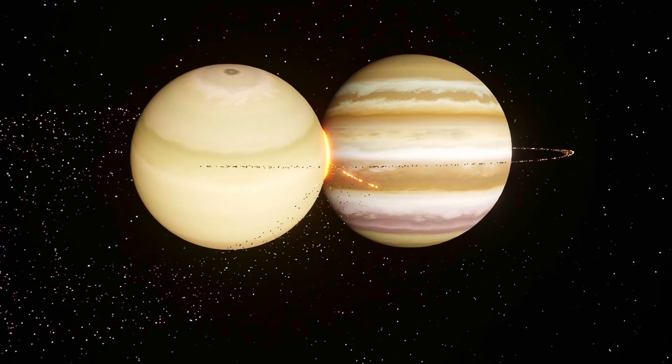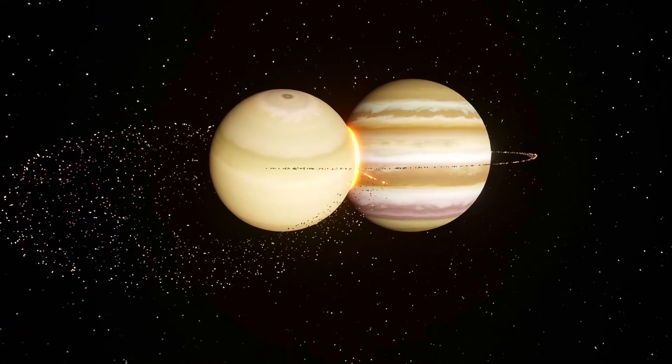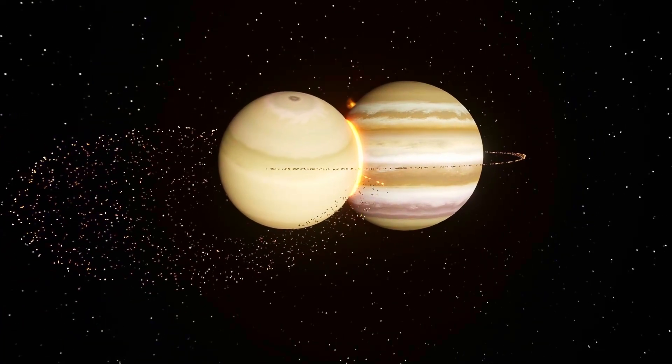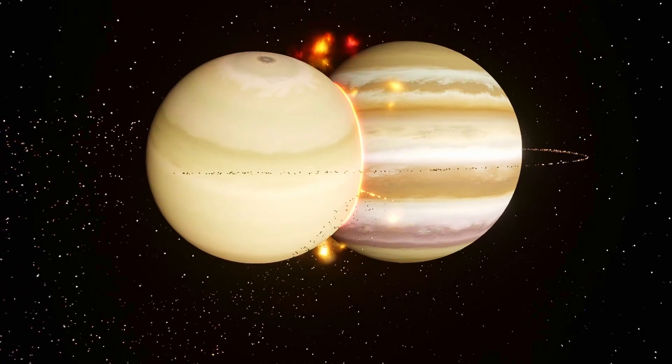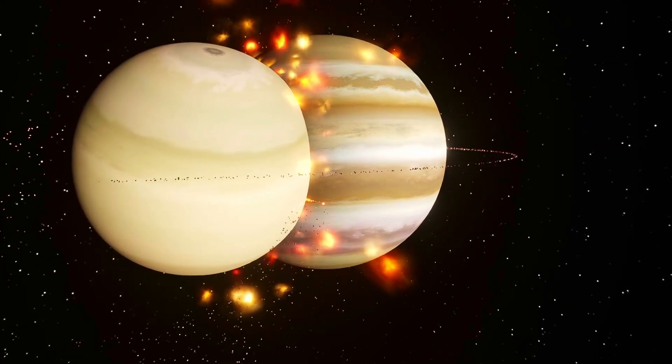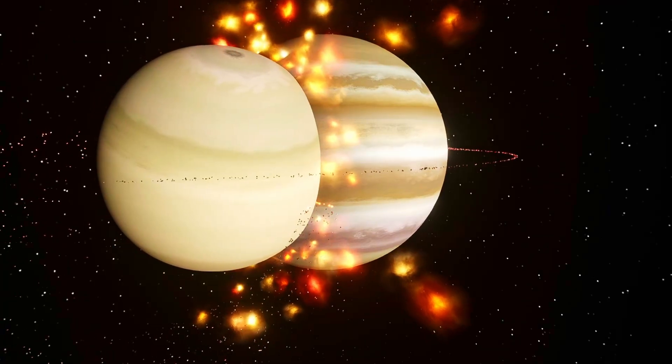When Saturn finally hits Jupiter, the gas layers tear apart like a cosmic storm. Massive shockwaves blast across both planets. Hydrogen and helium swirl, creating storms larger than Earth itself.